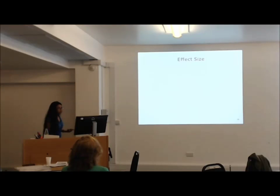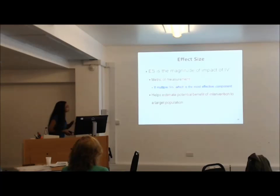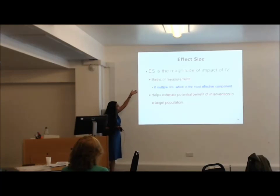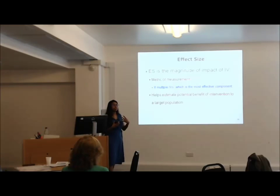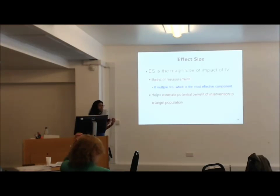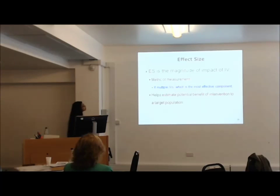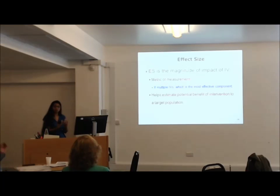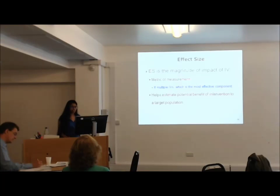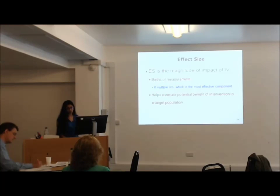Statistically, we tend to look at effect sizes, which is an important metric. We can look at the difference in observations between the baseline phase and the intervention phase — something as simple as Cohen's d, a standardized effect size. It helps estimate the potential benefit of an intervention to the target population, so if you have multiple independent interventions you can look at which is the most effective component.